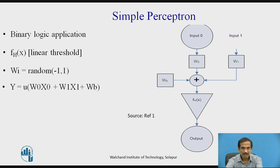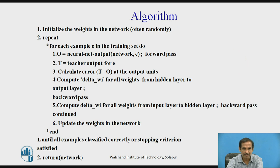A simple perceptron is a classifier because it gives an output of 1 or 0 — it has a binary logical application with a threshold linear value. It assigns weights of -1 or 1 at random and gives an output based on the weighted sum and bias value. The output in binary form can define a class: output 0 as one class and output 1 as another. Therefore a neural network can be used as a classifier. We initialize weights, repeat for each node in the training set, and the algorithm generates a 0 or 1 as the classified output.